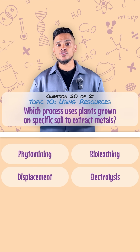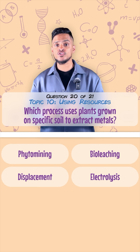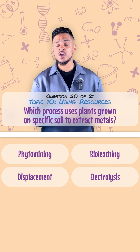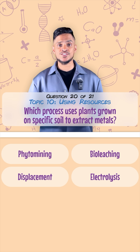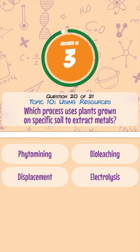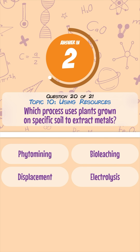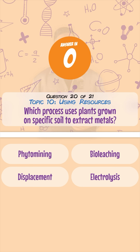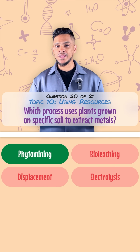Which process uses plants grown on specific soil in order to extract metals? Phytomining.